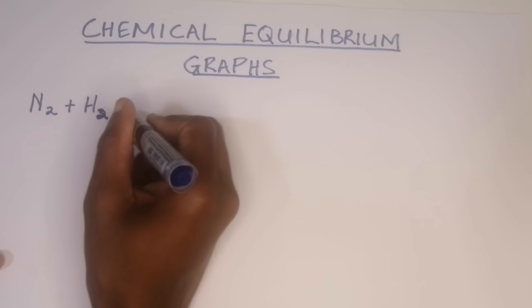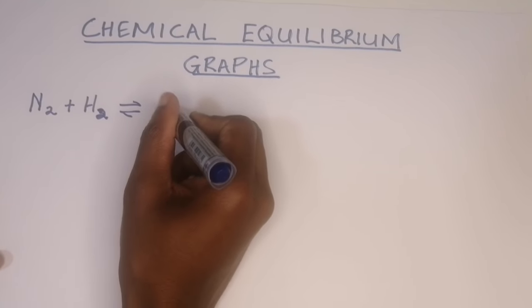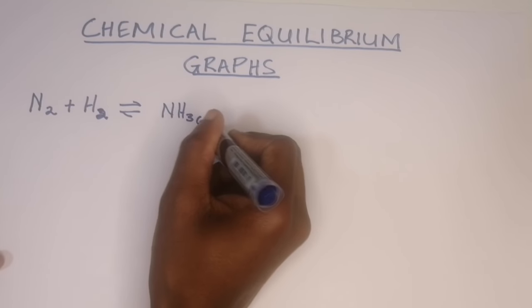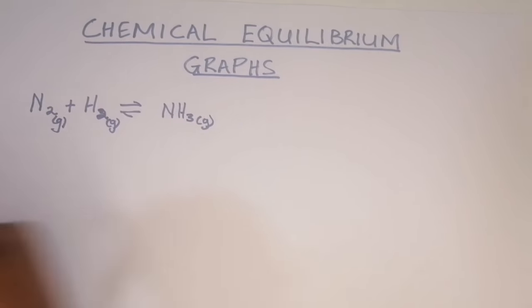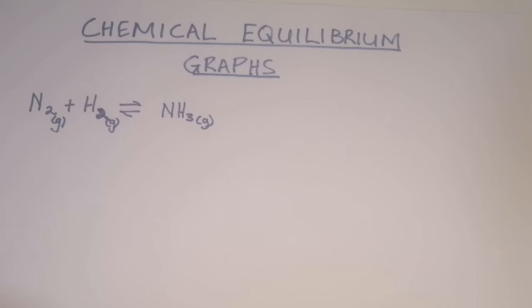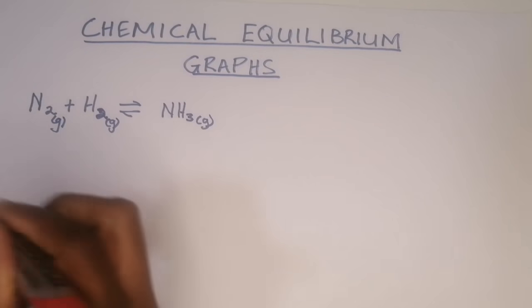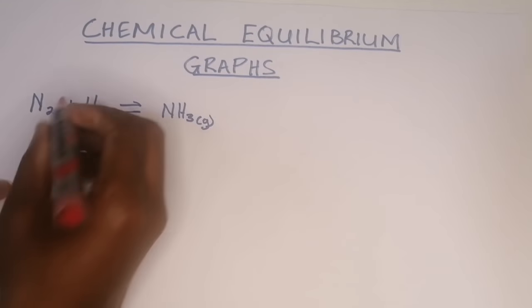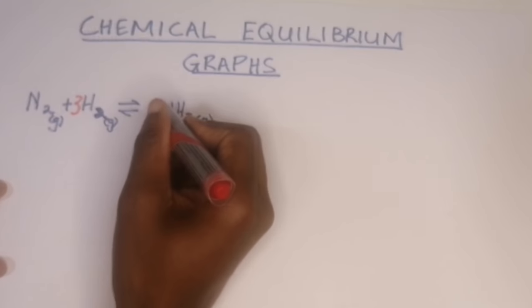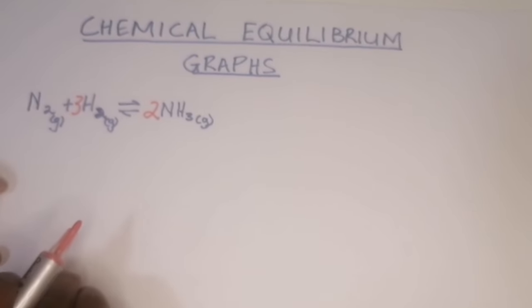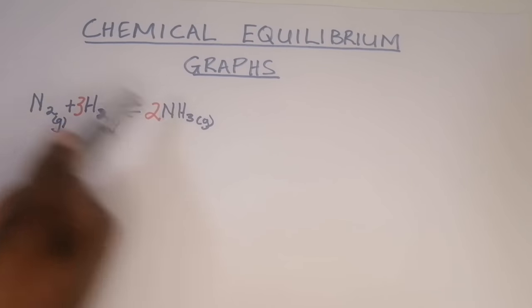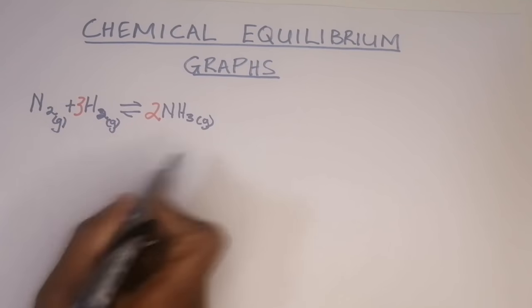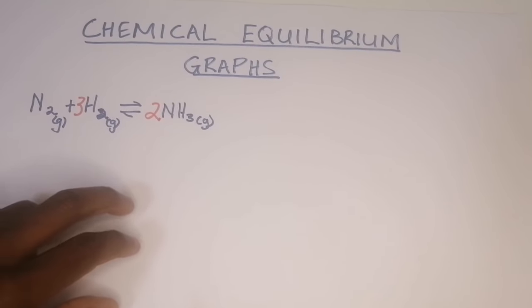The Haber process gives us NH₃. To balance this, we simply say N₂ + 3H₂ → 2NH₃. That means it is balanced. In our approach to graphs, I'm going to draw a graph of equilibrium for this reaction.